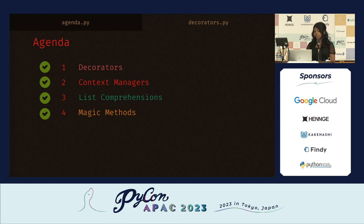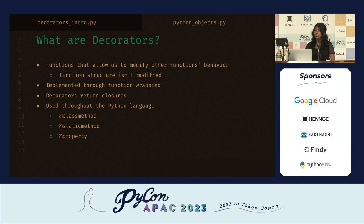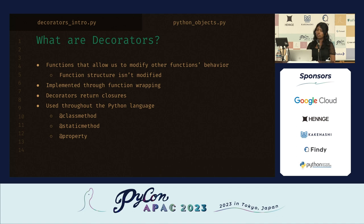If you're a newcomer to the language, we'll be walking through some simple examples here. So we're going to start by talking about decorators. What exactly is a decorator? A decorator is a function that allows us to change the behavior of another function. The key thing about it is that we can change behavior without changing structure, and the way this works is through implementation of function wrapping.